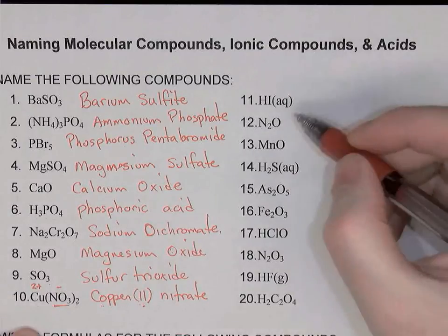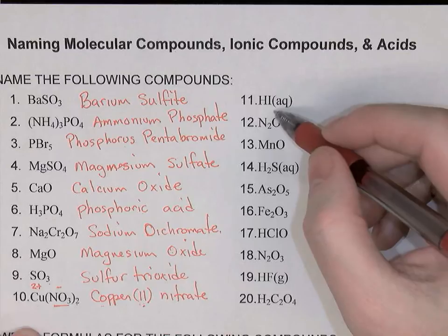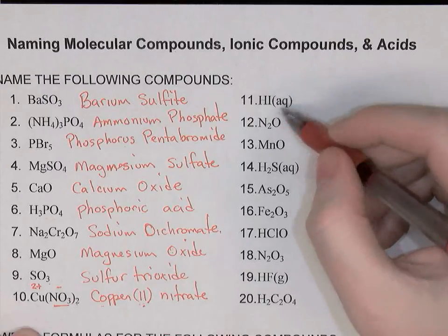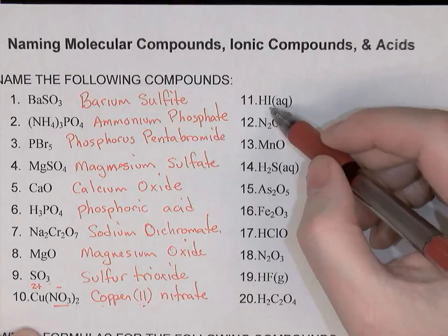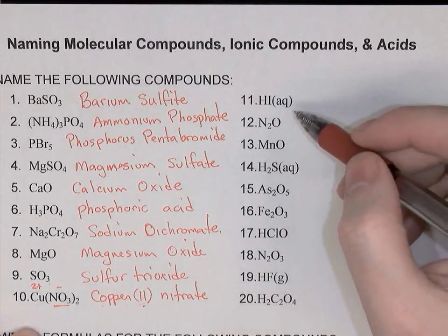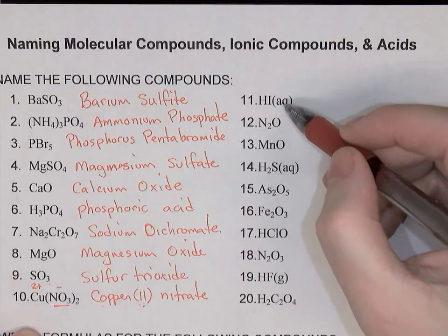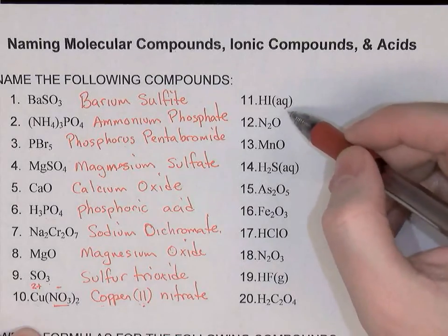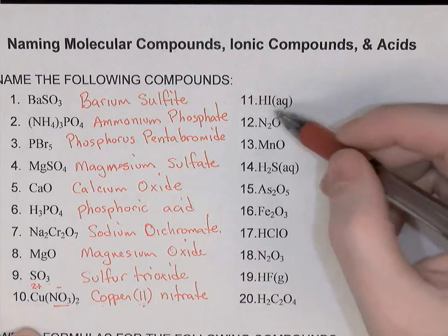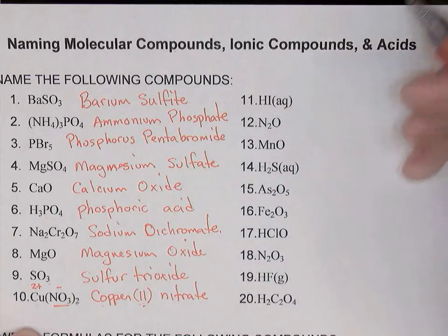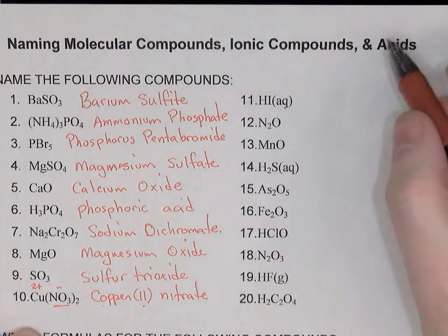Number 11 starts with hydrogen, so we're likely looking at an acid. This is a binary acid — hydrogen bonded to one other element, iodine. If it were gaseous (a G in brackets), we would not name this as an acid; we would just call it hydrogen iodide, almost like a covalent compound but with no prefixes. Since there's AQ here — aqueous — it means it's dissolved in water, and therefore we name it as an acid.